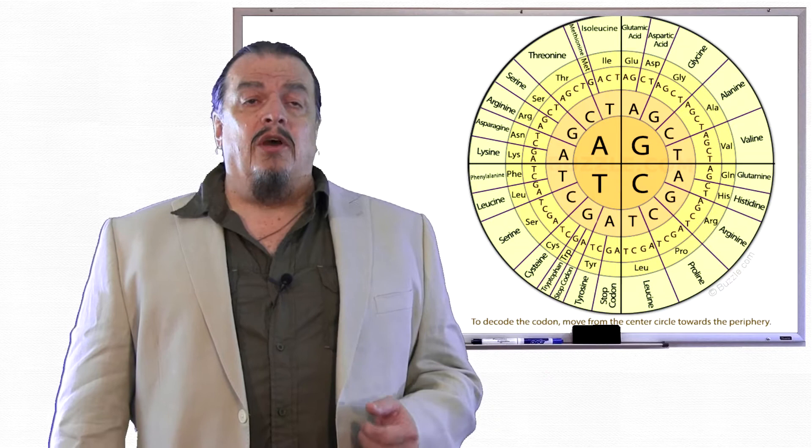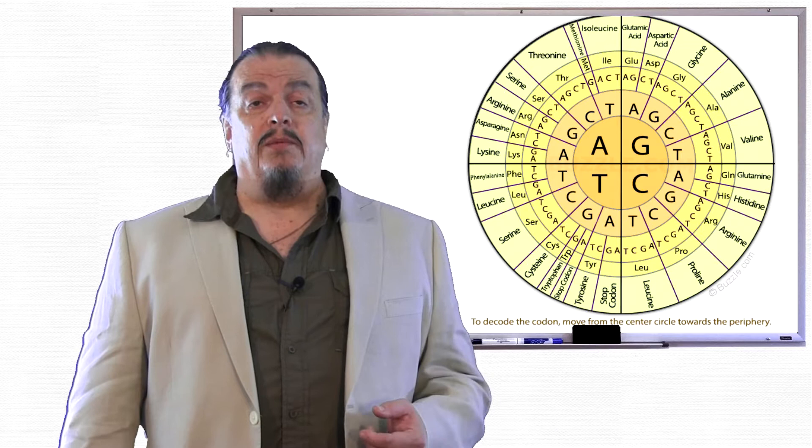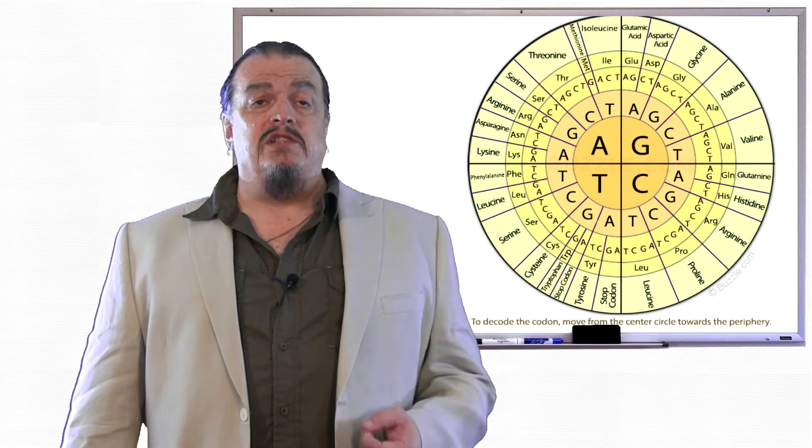As you can see on this codon chart, all codons have three letters that stand for three nitrogen bases from either adenine, cytosine, guanine, and thymine. For example, on the chart, the amino acid glycine is formed by the combinations of GGT, GGC, GGA, and GGG.